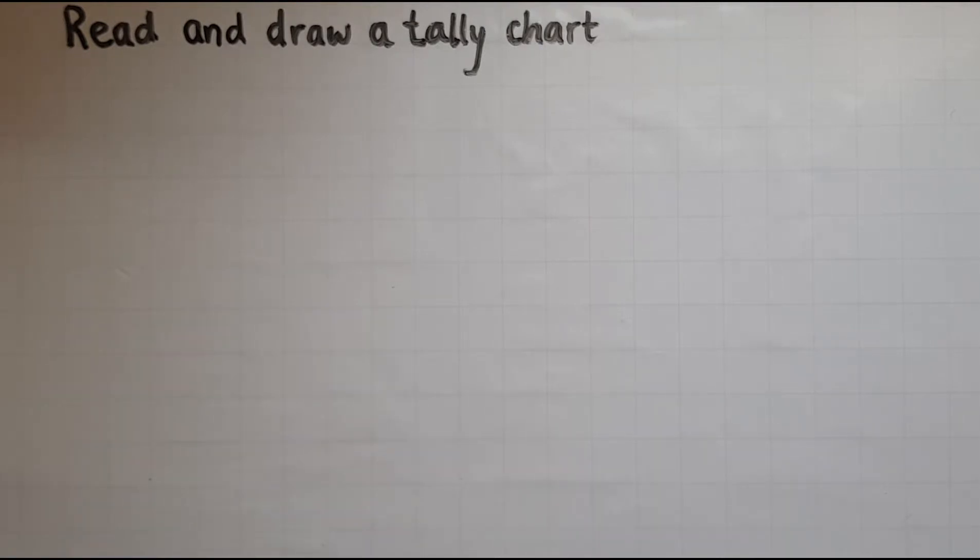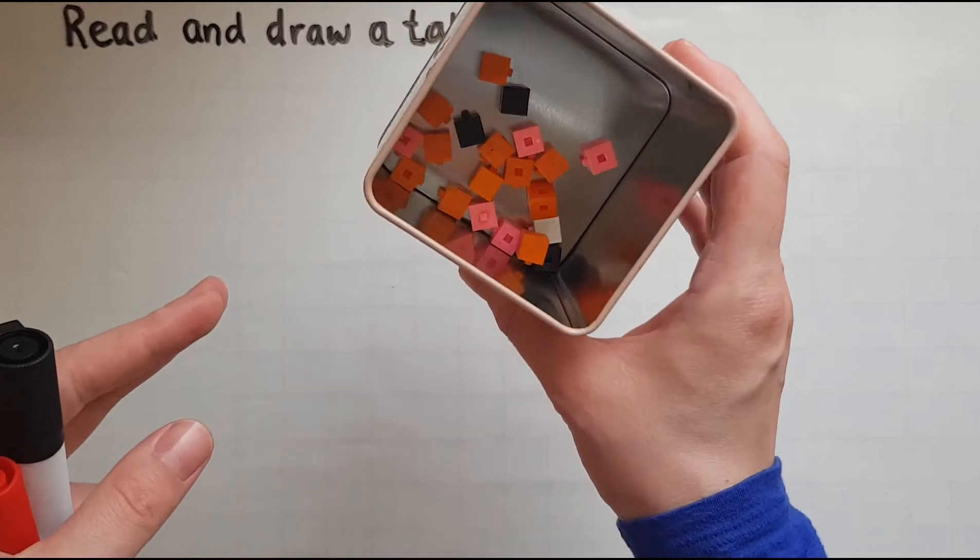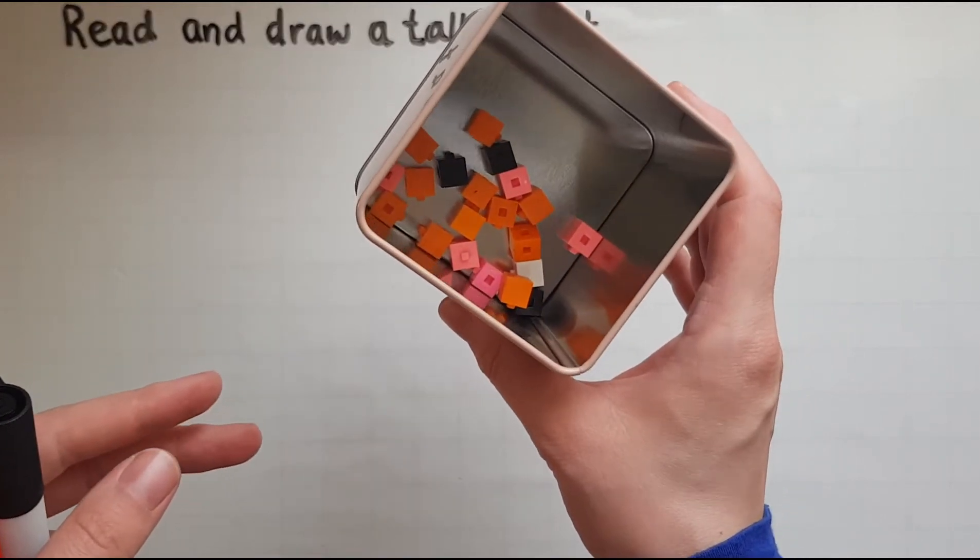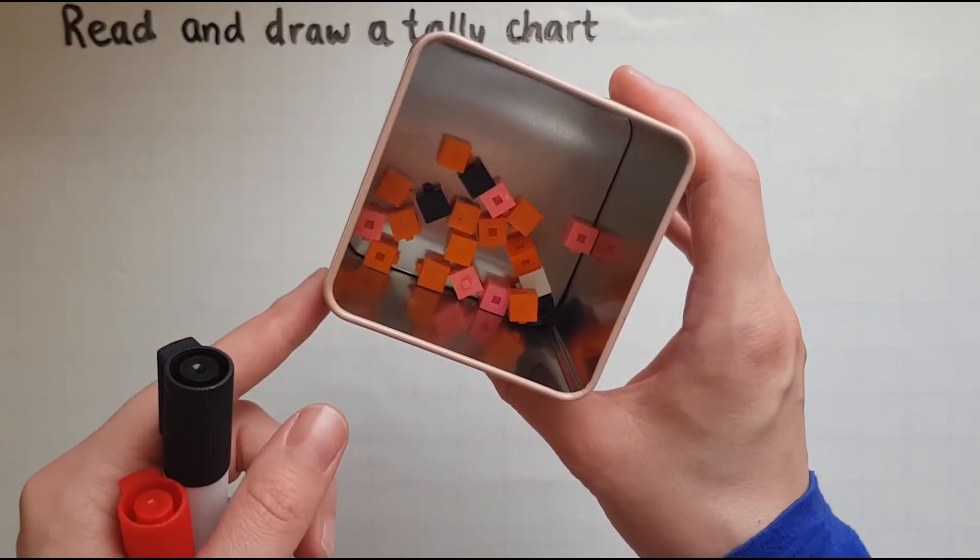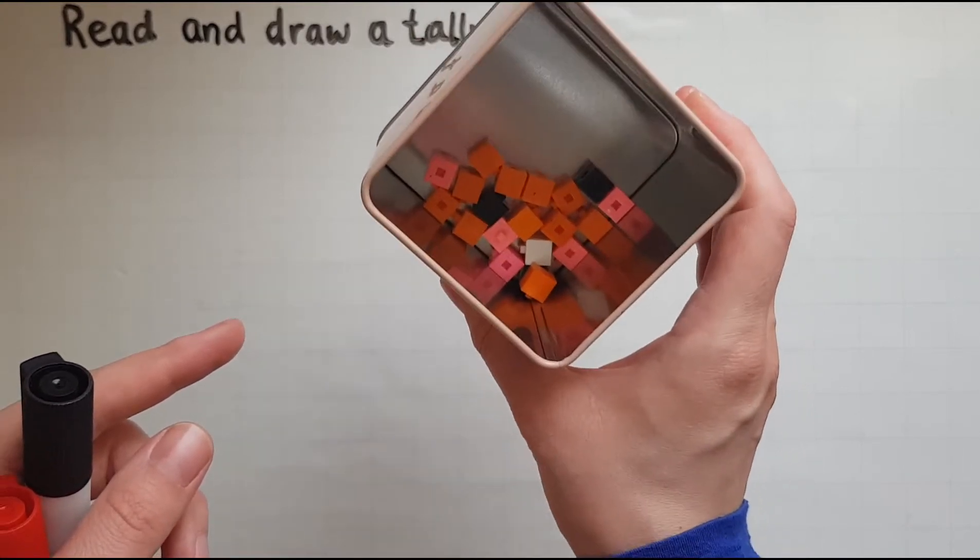So I'll show you an example of how a tally chart looks like and how it's drawn. The example that I'll use is the cubes that I have in this tin. So I'll find out and I'll show how many of each color there are because I've got different colors in here.